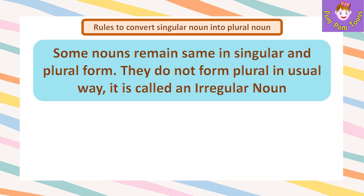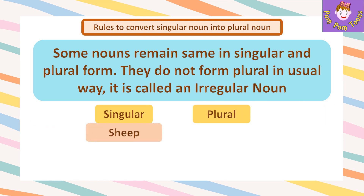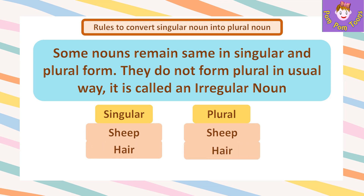Some nouns remain the same in singular and plural form. They do not form plural in the usual way, so they are called irregular nouns. For example, sheep → sheep, hair → hair, deer → deer.